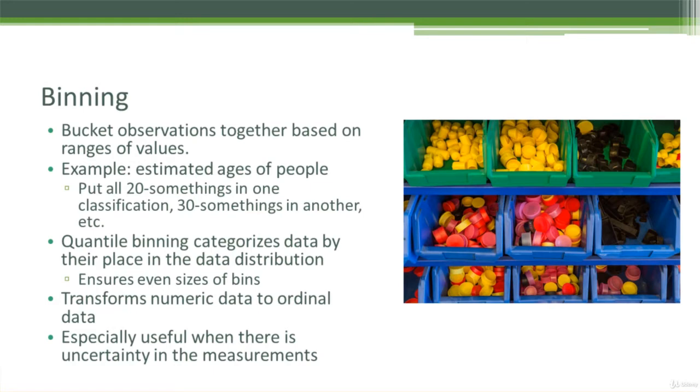So as an example, maybe I have the ages of people in my dataset. I might put everyone in their 20s into one bucket, everyone in their 30s into another bucket, and so on and so forth. That would be an example of binning, where I'm just putting everyone in a given range into a certain category.